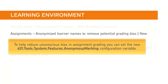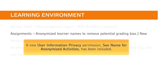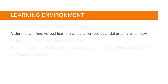To help reduce unconscious bias in assignment grading, you can set the new D2L Tools System Features Anonymous Marking configuration variable to allow instructors to configure assignment submissions to display anonymized learner names. A new User Information Privacy permission — CNAME for Anonymized Activities — has been included, and will display the user's real name alongside the anonymous indicator, if required.